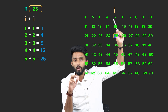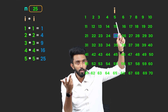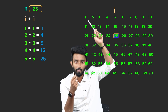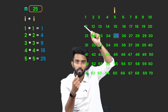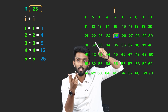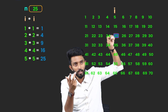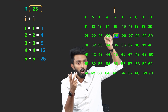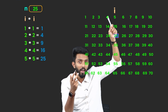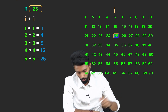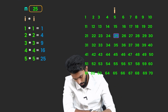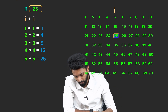The approach is very simple: start a loop from 1, multiply the I value with itself, and check whether the multiplication results in the given N value. The question is: till where should the loop go?